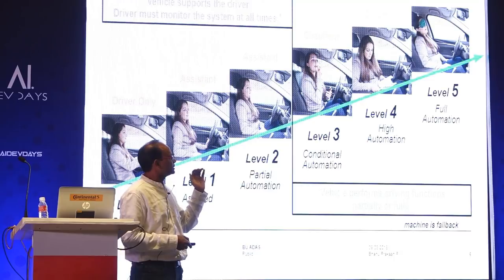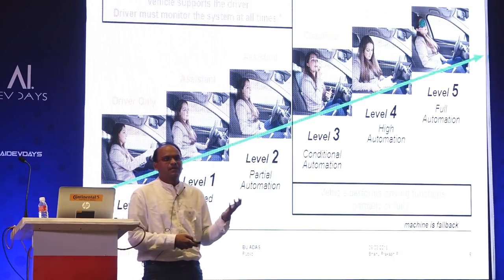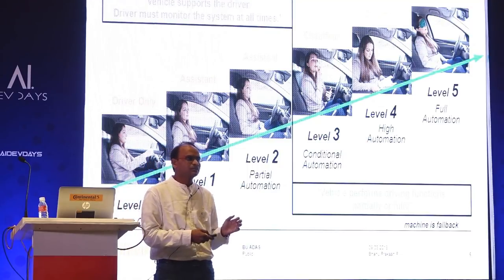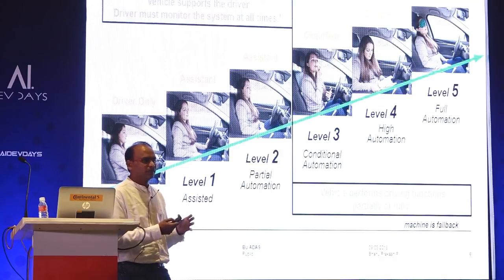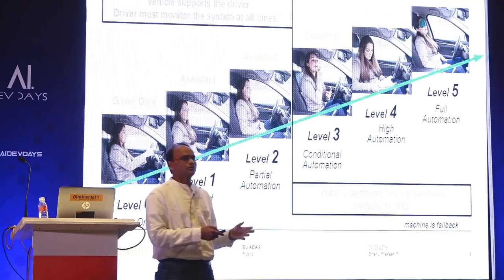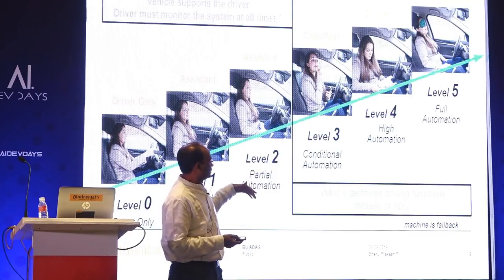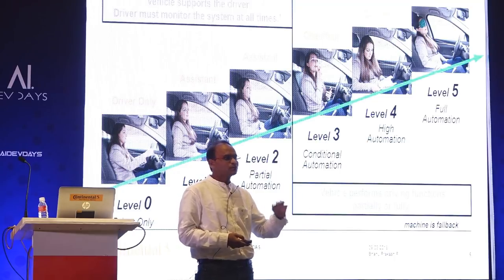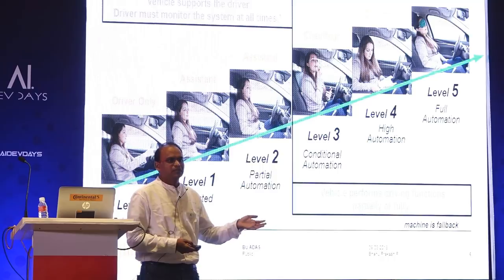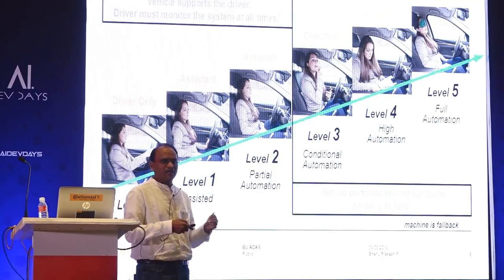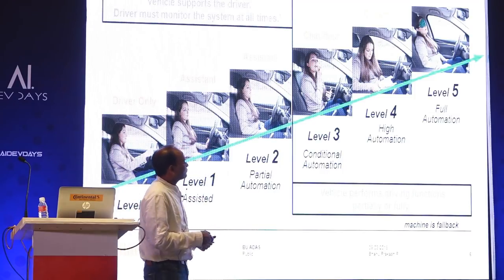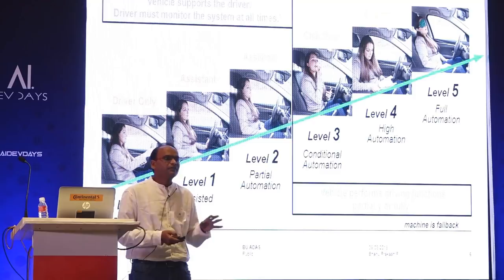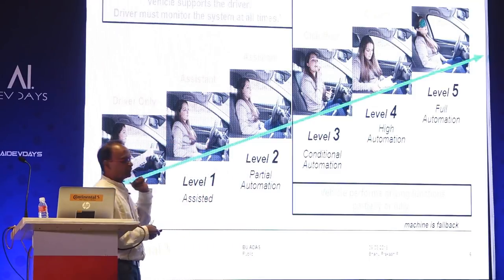Level four is high automation — the driver can keep his eyes off and do whatever he wants while the vehicle drives by itself. If it encounters an unpredictable situation, it gives a warning. If the driver doesn't take over, the vehicle pulls off to the side, parks itself, and stops. There is no mandate that the driver must take over when the warning appears. Level five is complete automation — irrespective of road scenarios, urban or off-roading, everywhere it should be able to take care — which is a distant dream, but we are on the way.